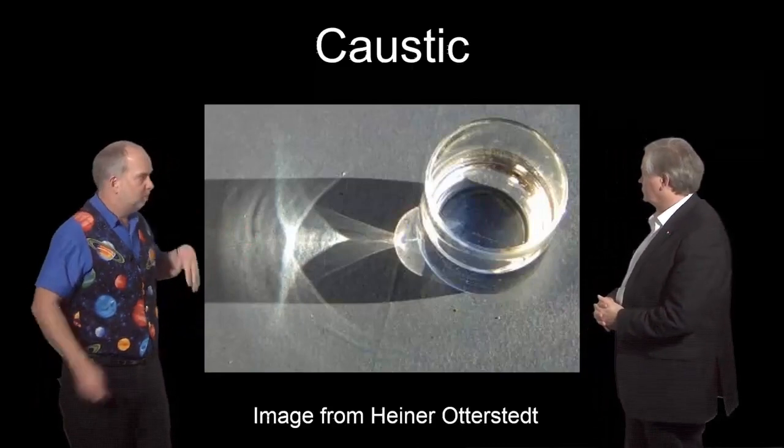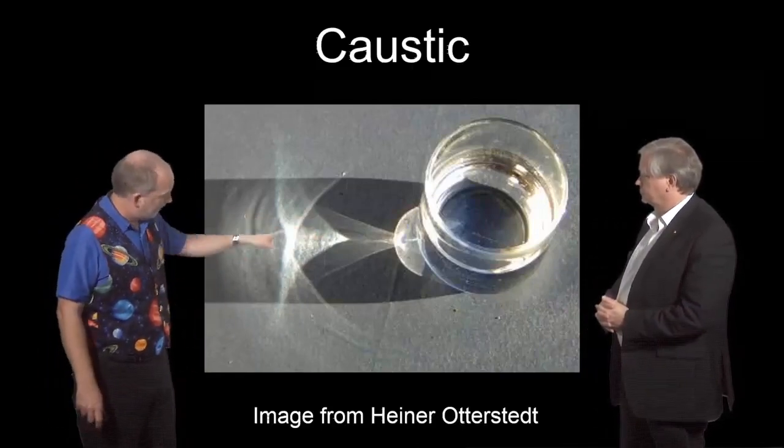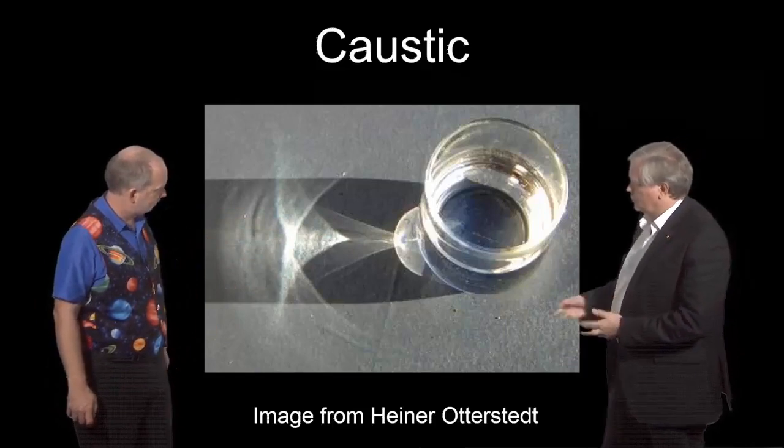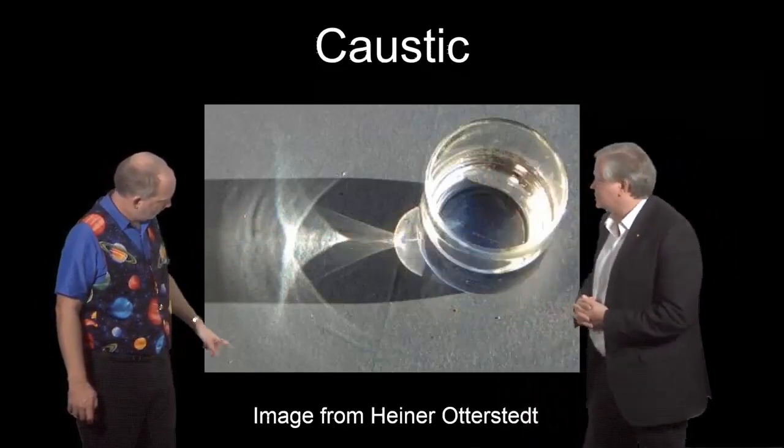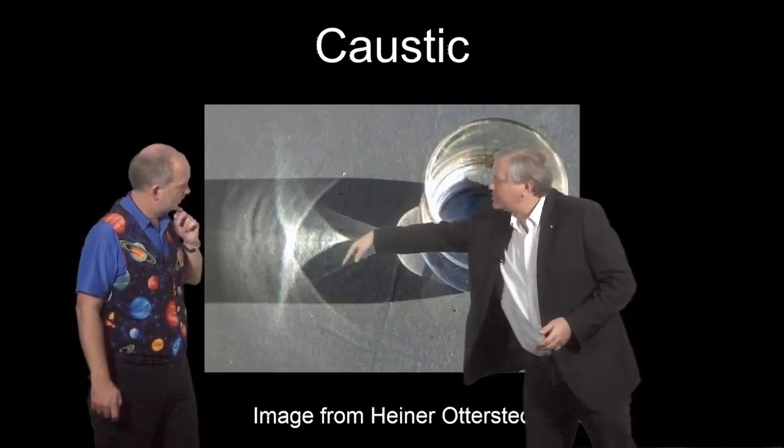So we've talked a bit about what a caustic is with hand waving type explanations. If you have light going through a glass you get these sort of patterns here. Yep and so those little patterns are the caustic and essentially where the light shining here gets added up into specific spots.